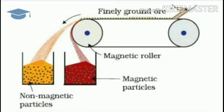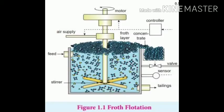The next method is froth flotation. In this method, there is a difference in wettability between ore particles and impurities. The ore particles are wetted by pine oil while the impurities are wetted by water. A motor rotates and the ore particles, being lighter, come to the surface and form a froth, while the impurities, being heavier, sink to the bottom.